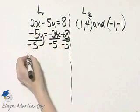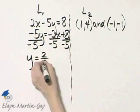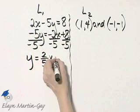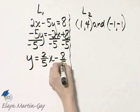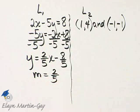Let's see what we have. We have y is equal to, a negative divided by a negative is positive, so that's 2 fifths x minus 8 fifths. The slope of the graph of this line is the coefficient of x, which is 2 fifths.